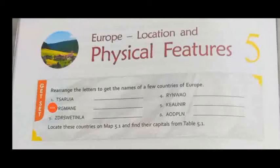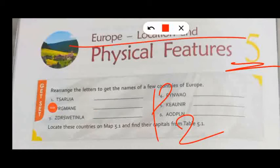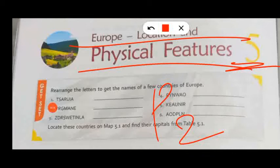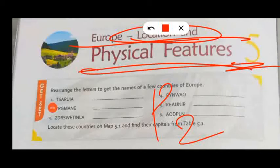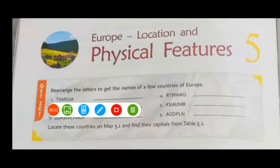Hello students, I am again back with Part 2 of Chapter 5 — Europe: Location and Physical Features. In this video I will discuss only the countries of Europe and their capitals. In Part 1 we discussed the complete location of Europe, and in Part 3 we'll discuss physical features. So I'm going to make this part very short — only countries and their capitals.